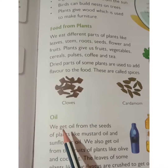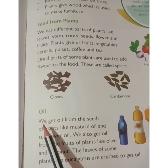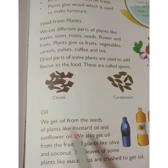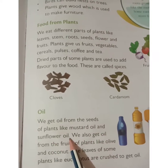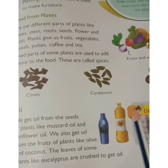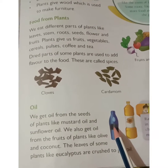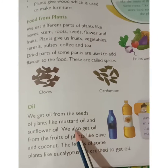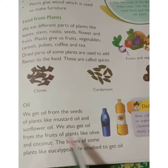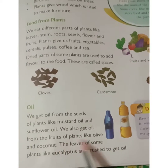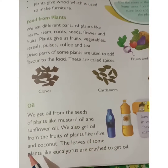Next is oil. We get oil from the seeds of plants like mustard and sunflower. We also get oil from the fruits of plants like olive and coconut.